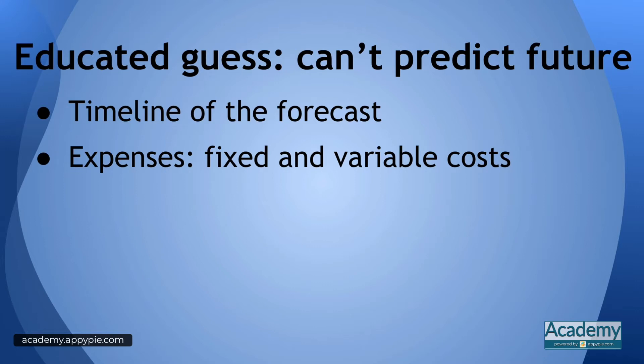Typically in accounting, costs are divided into fixed and variable costs. Fixed costs are the ones where you know what they're going to be. For example, if you hire a legal company and they charge you a fixed price, you might be paying a thousand dollars every month — that's a fixed cost.